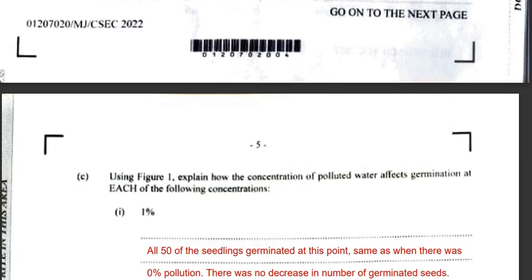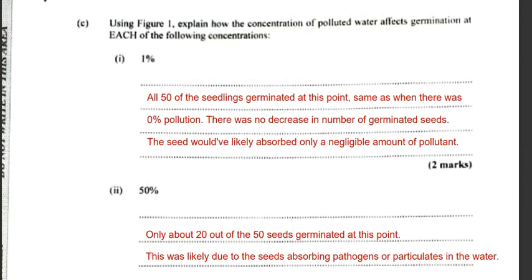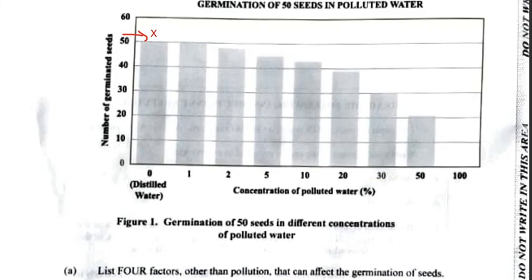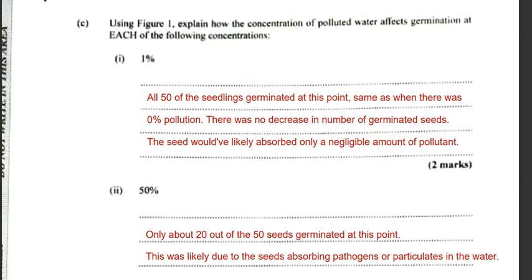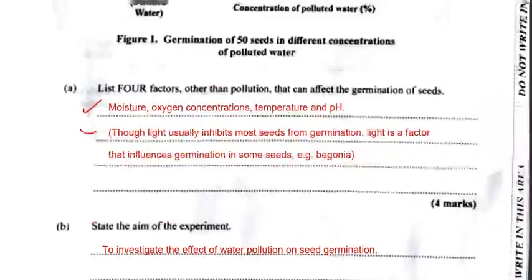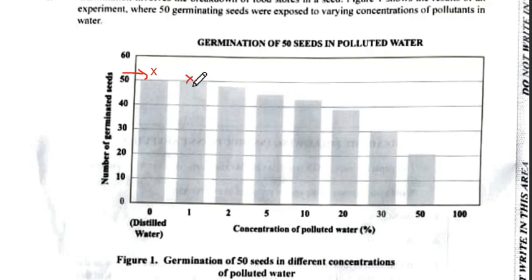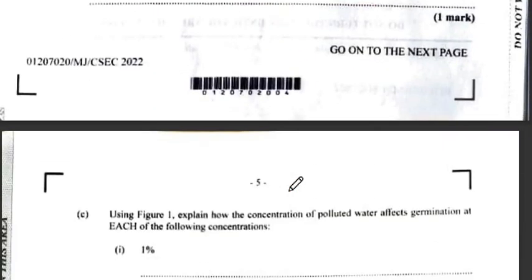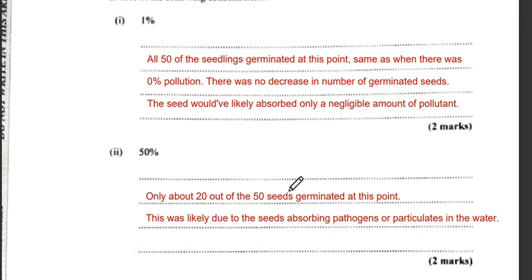The next question says, using Figure 1, explain how the concentration of polluted water affects germination at each of the following concentrations. Looking at one percent concentration, we can see that it would follow at about 50 seeds germinating. For two percent we'd have around 45, and for five percent around 43 to 44.